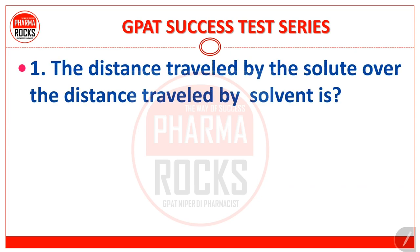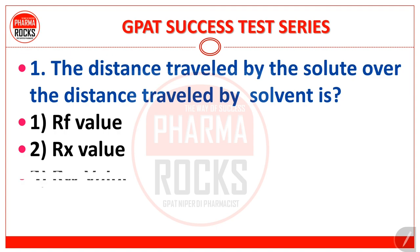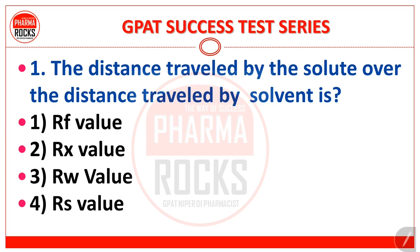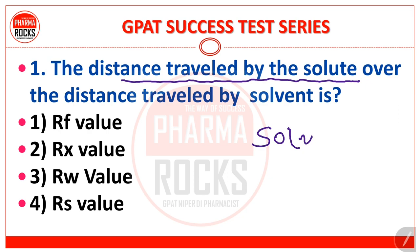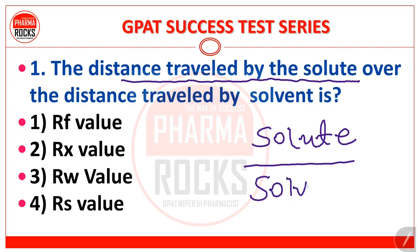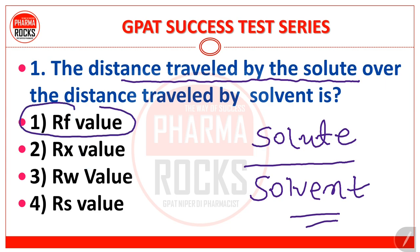So GPAT success test series — here is question number one. The distance travelled by the solute over the distance travelled by the solvent is called: option 1 Rf value, option 2 Rx value, option 3 Rw value, and option 4 Rs value. The question is: the distance travelled by the solute over the distance travelled by the solvent.